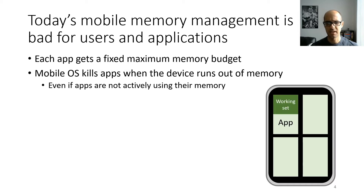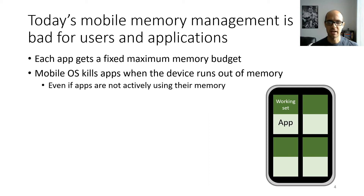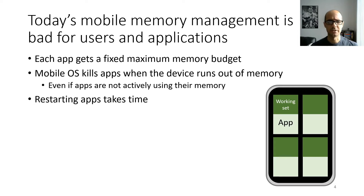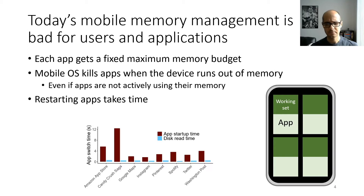This is true even if apps are not actively using their memory. If that first app has a working set that's only half of its memory footprint, and the same is true for the other apps, the operating system is not going to be able to identify and use that unused memory — it's going to have to kill entire apps. We measured startup times of popular Android apps and compared those to the time it would take to read the app's entire memory image from disk, and found that startup times were much higher.